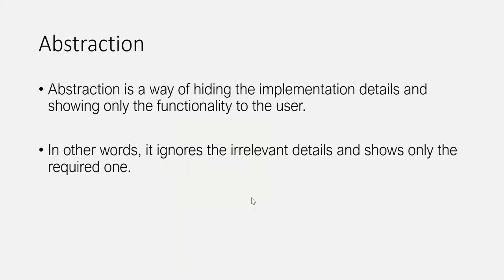Then we have abstraction. Abstraction is a way of hiding the implementation detail and showing only the functionality to the user. In other words, it ignores irrelevant details and shows only the required ones. For example, if you are using a smartphone, you don't care about how the application works internally — you are only interested in using it. This is called abstraction.